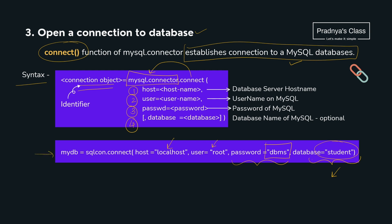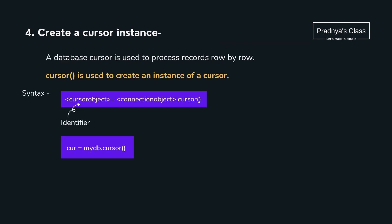Look at the example — this is the alias which we have given to this module. The host and user parameters are fixed, while the password and the name of the database will change depending on your setup.